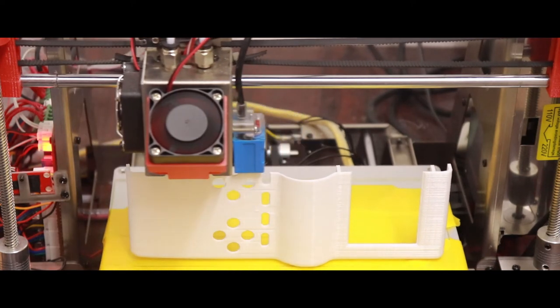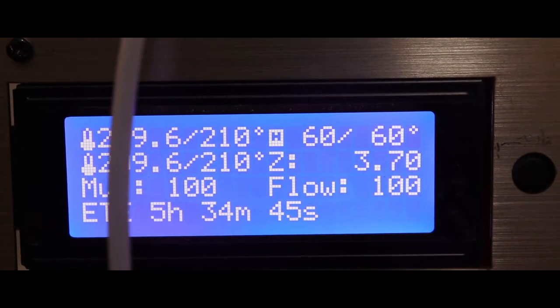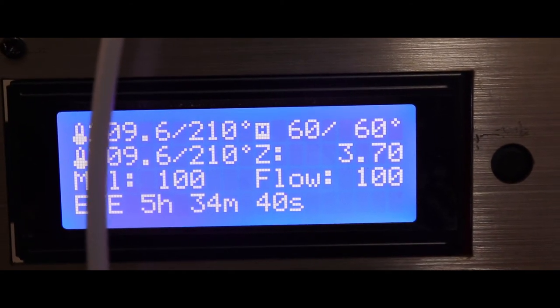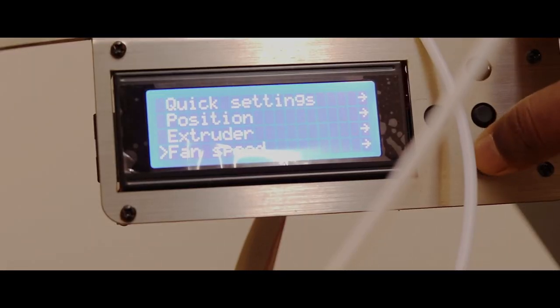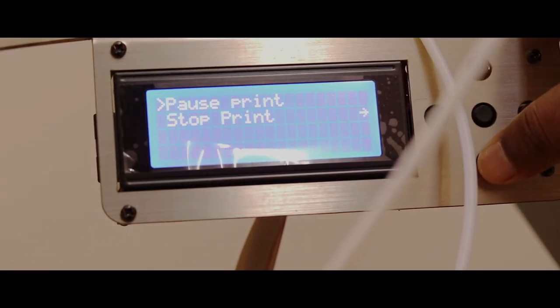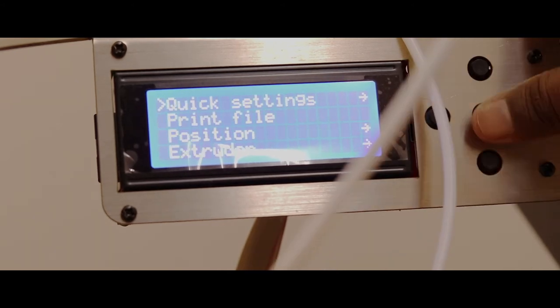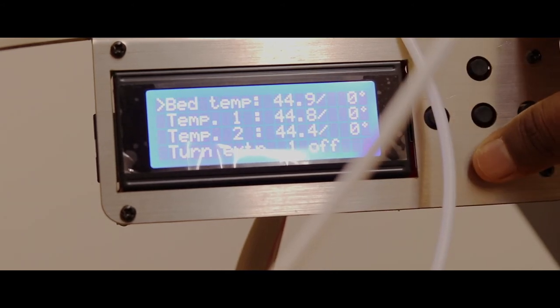I personally don't prefer the controls on the LCD because you can't pause the print or stop the print just like that. Unlike Makerbot, every time you have to go through corresponding setting and then choose to pause or stop the prints. If you want to change the filament, you have to select the extruder first from another menu.